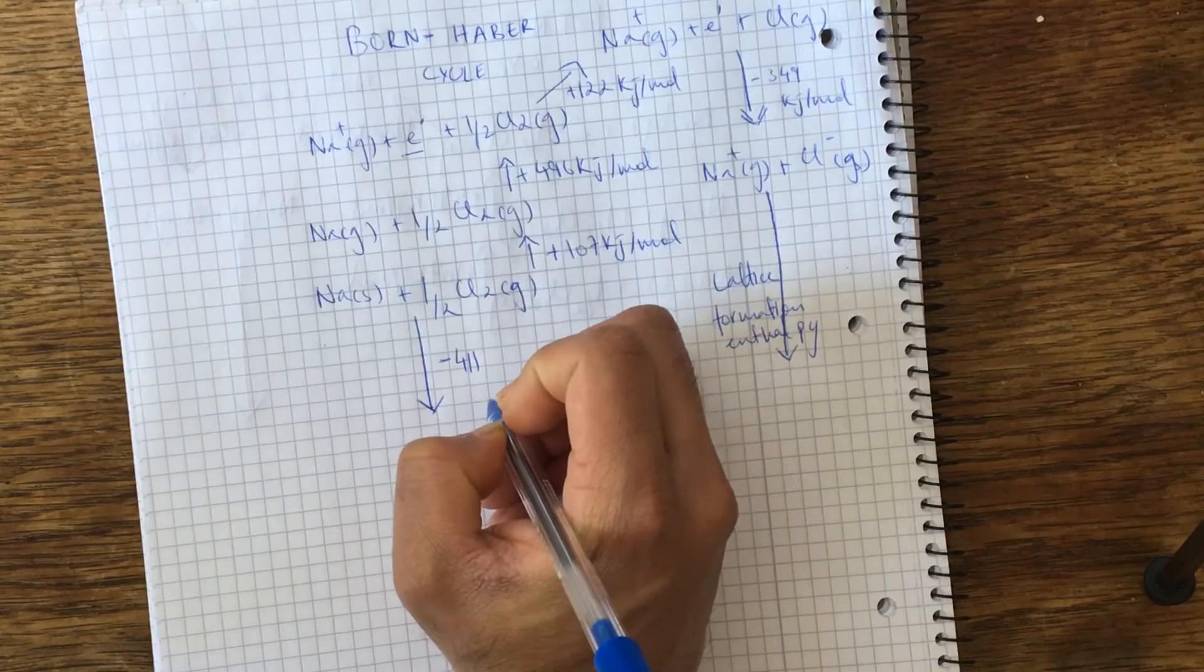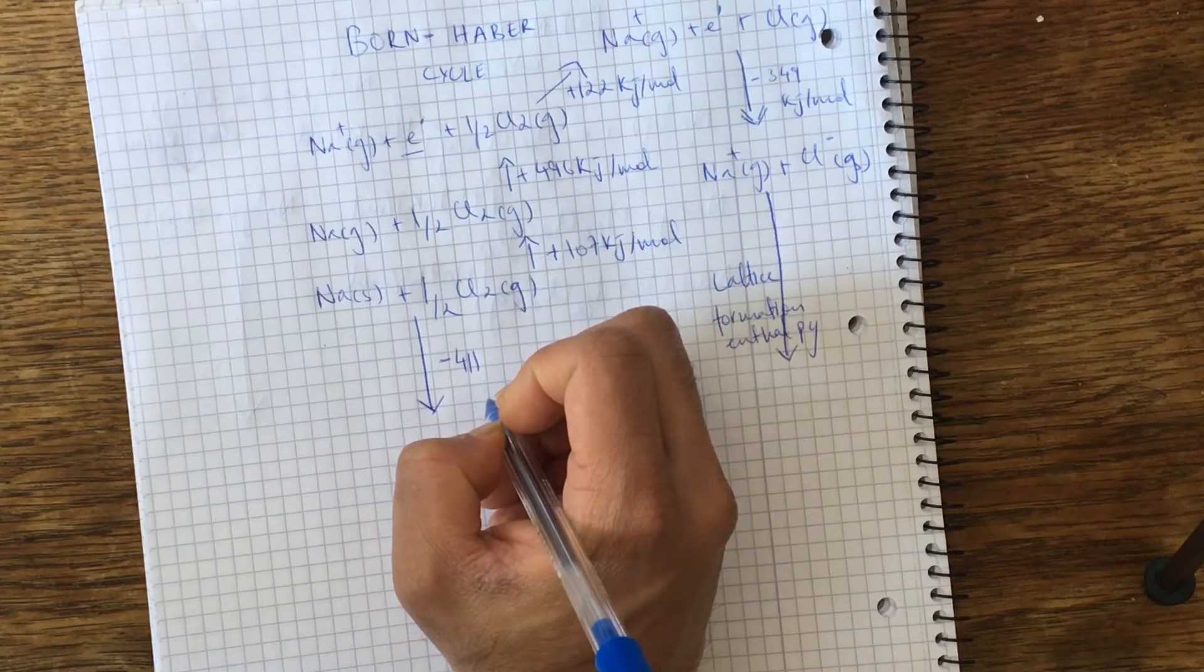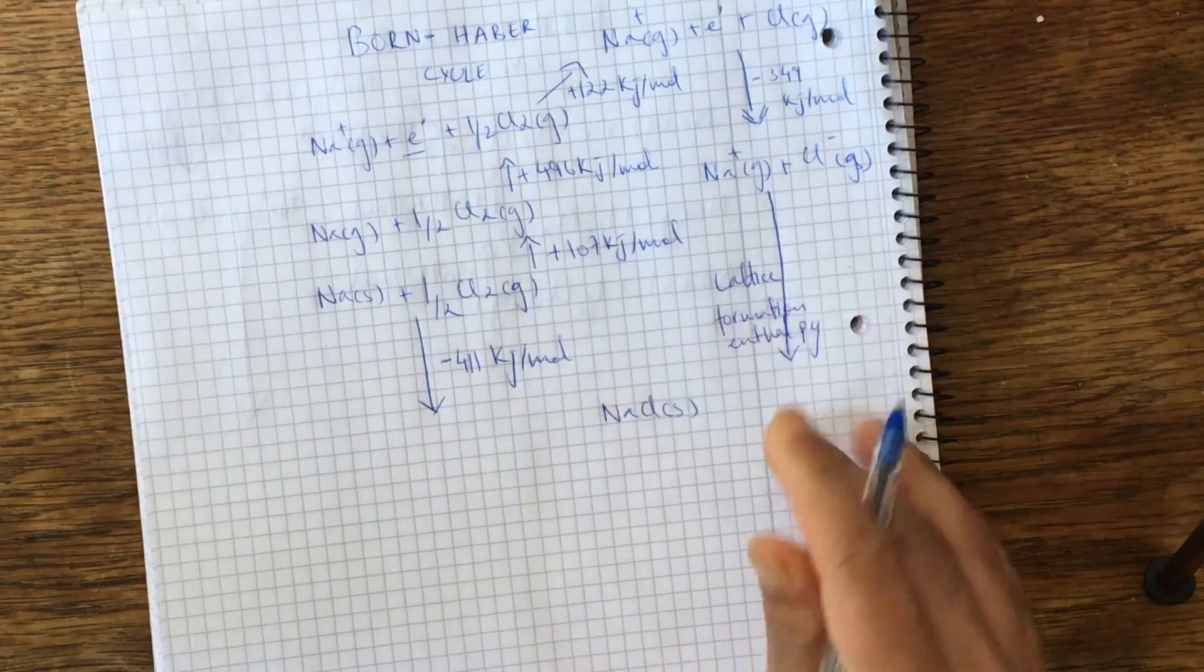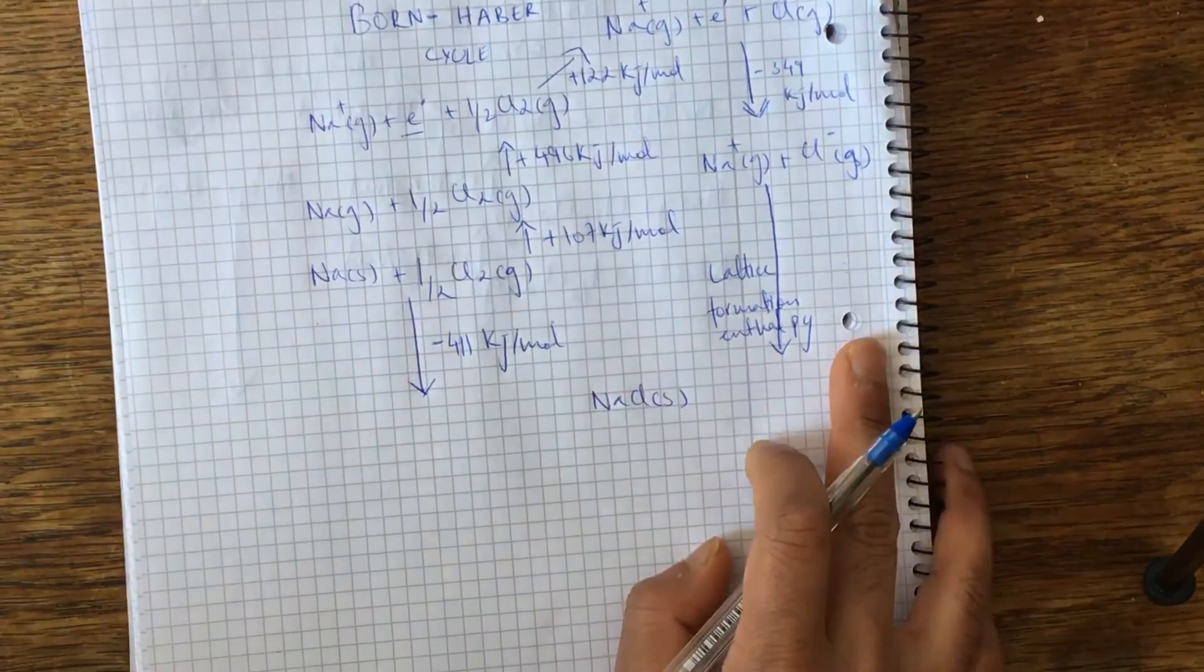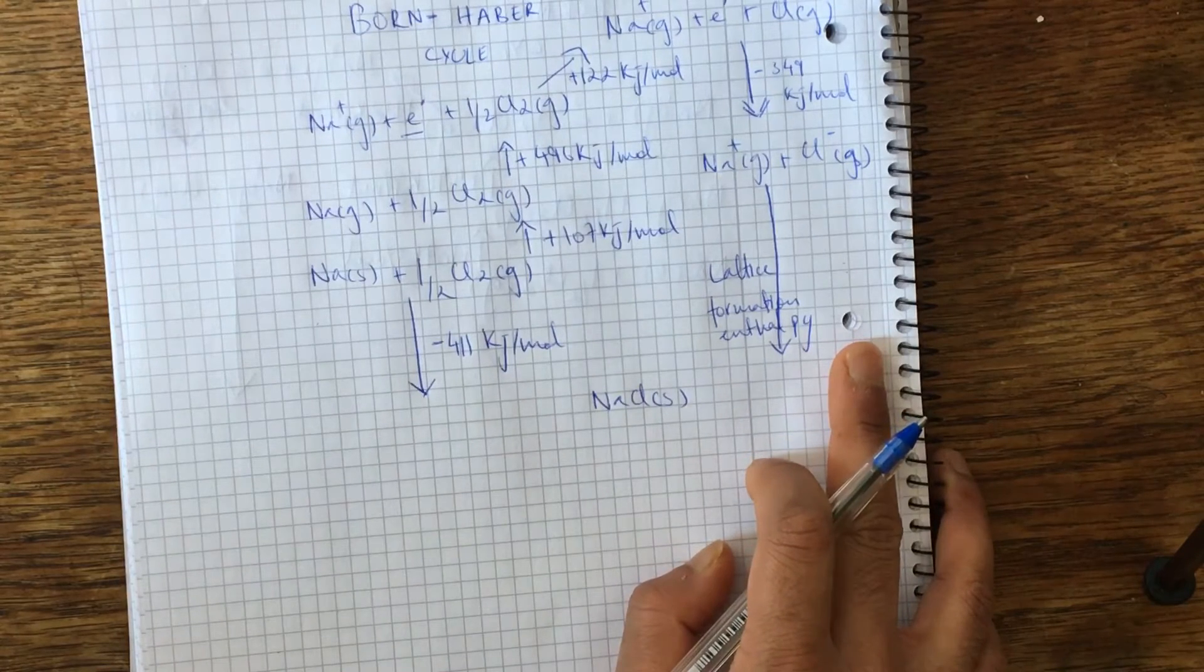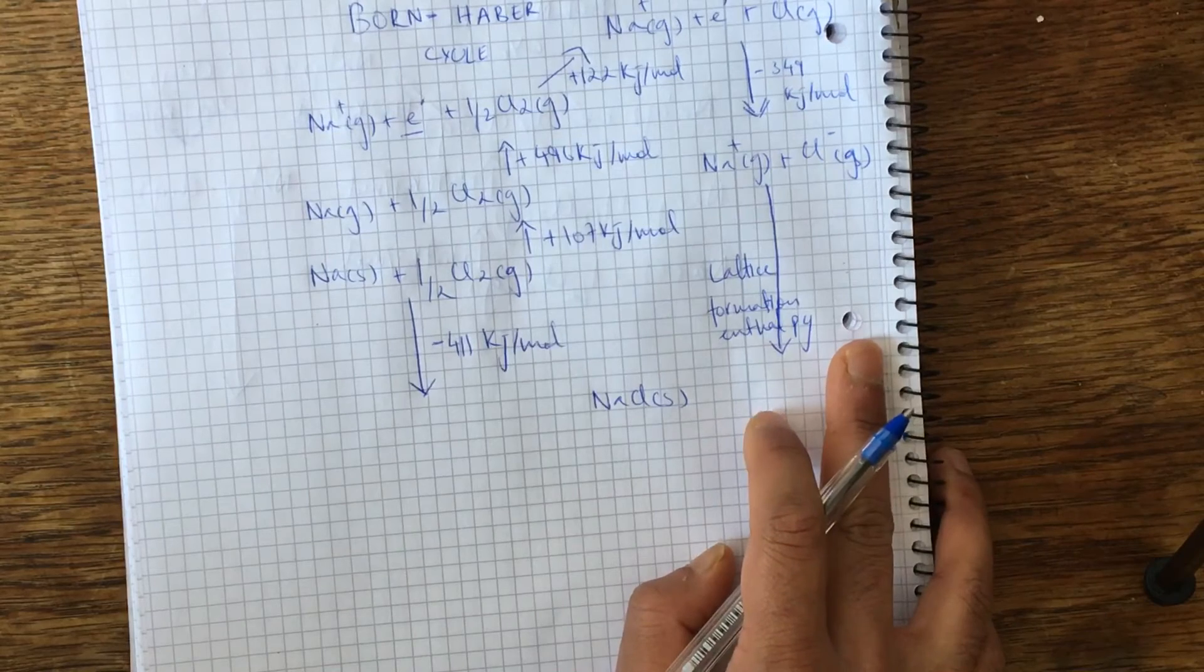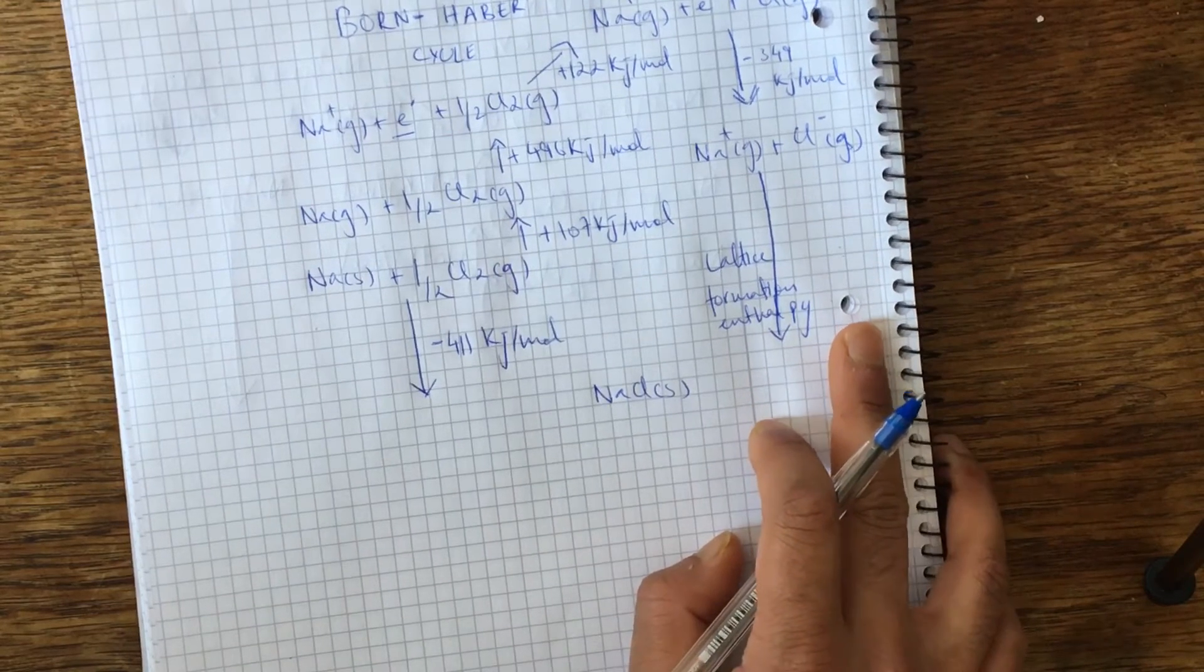And in this case, it's minus 411 kilojoules per mole, because obviously overall it's an exothermic reaction. More bonds will be formed than the ones that will have to be broken to form the sodium crystal, so that's why it's negative.